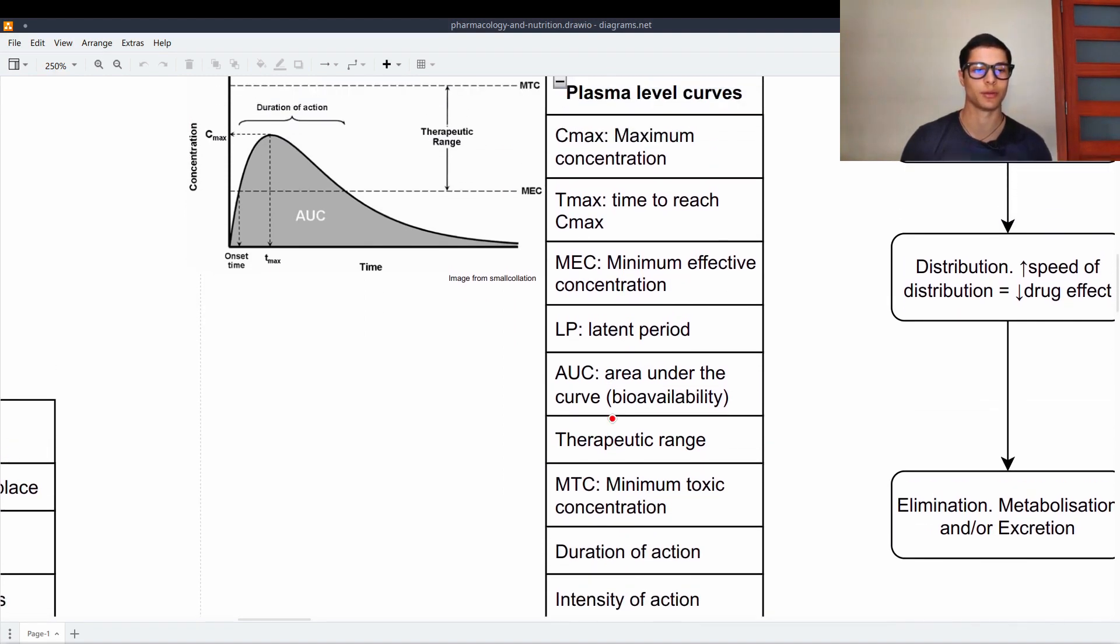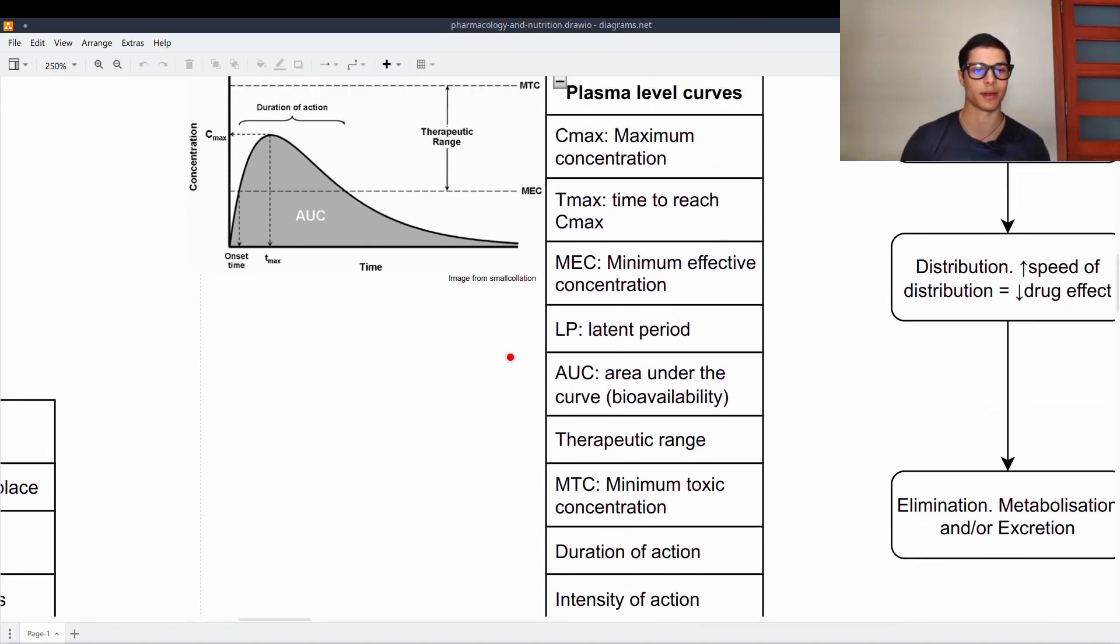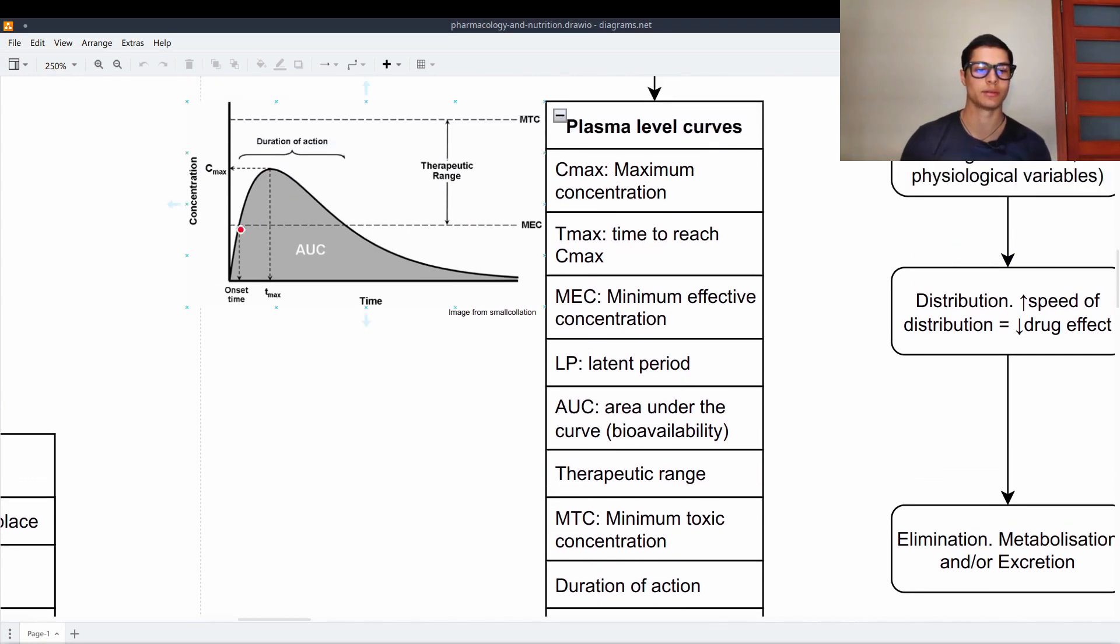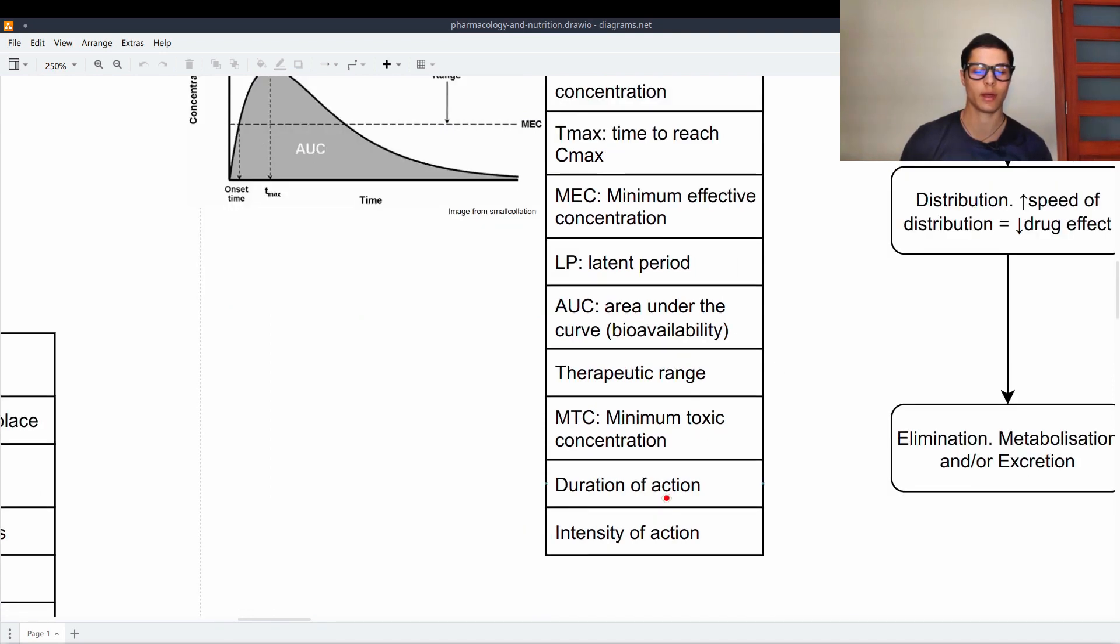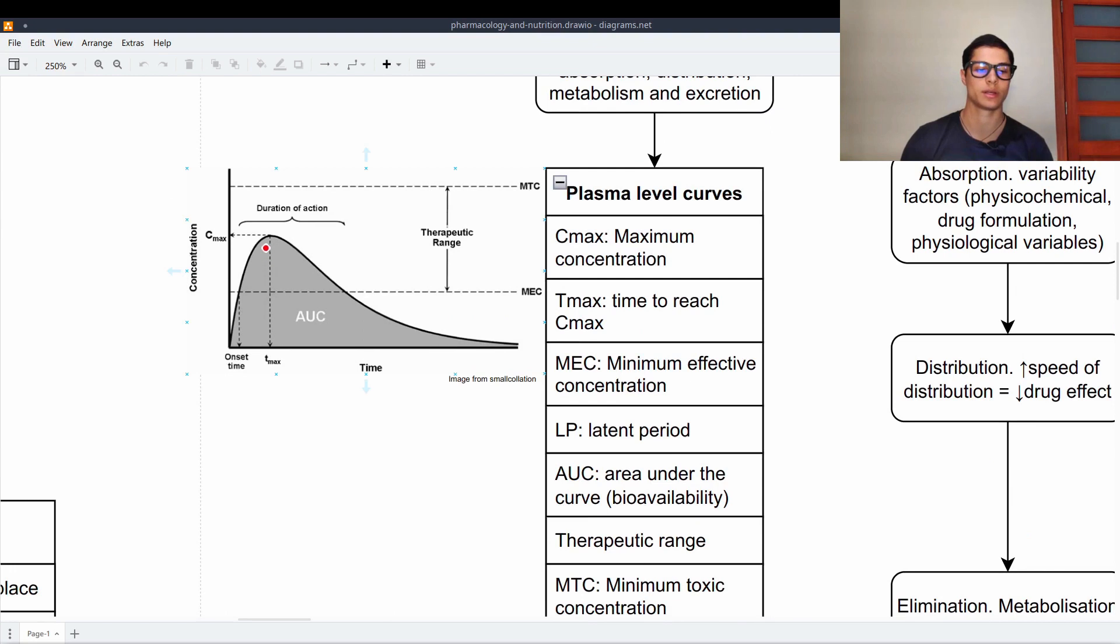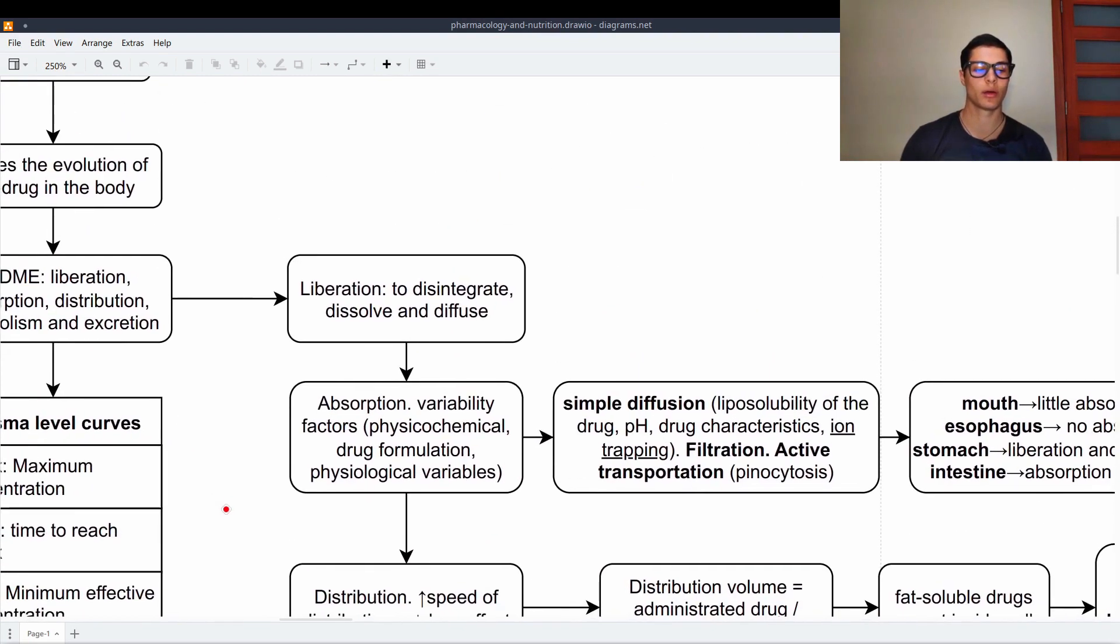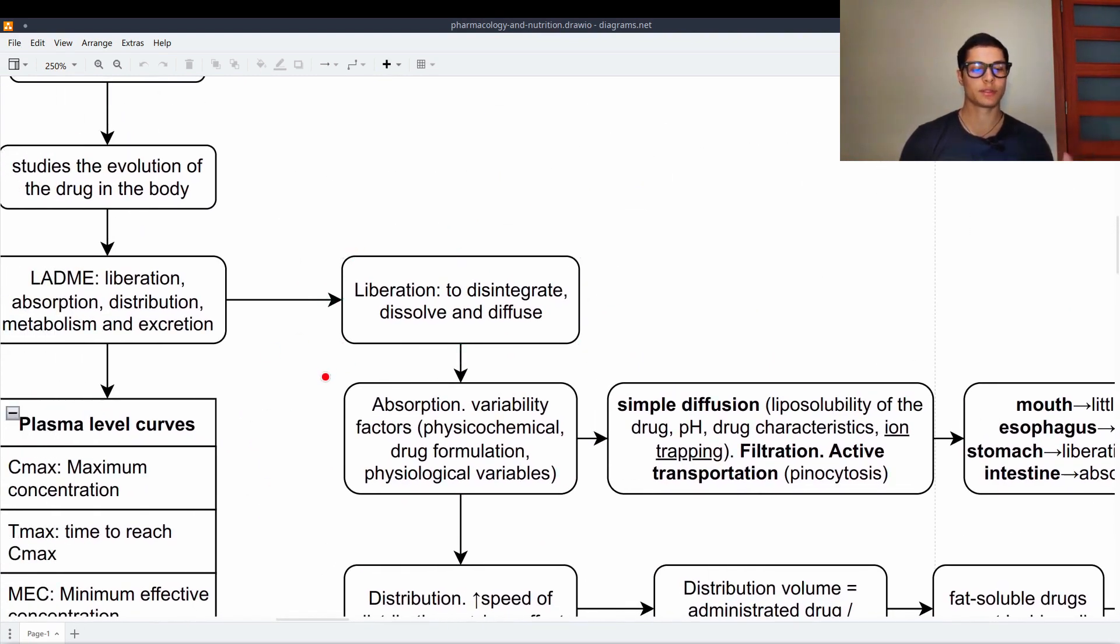Duration of action is from when it starts to be effective to the last. And then we have the intensity of action from the minimum effective concentration to the maximum concentration. Having that in mind, we can go and see the different stages.